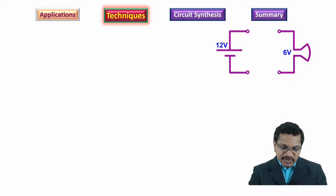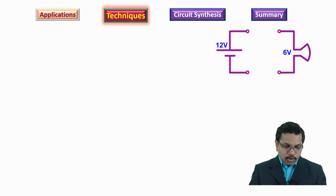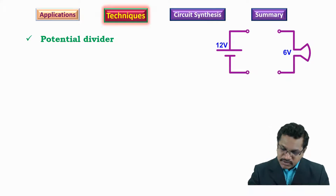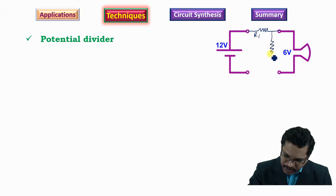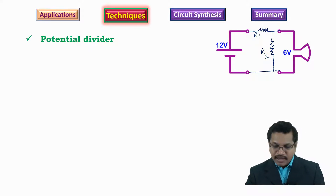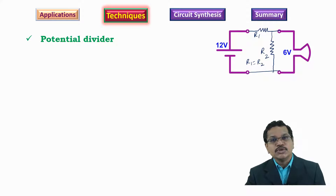What are the techniques that are familiarly employed? To begin with, there could be a simple potential divider inserted between the input and the output. We have a resistance of value R1 and another resistance of value R2, with the ground terminal connected. Simple mathematics tells us that R1 will equal R2 for the voltage to be divided equally between the two resistors, giving 6 volts at the output.